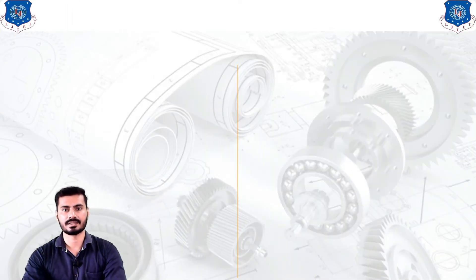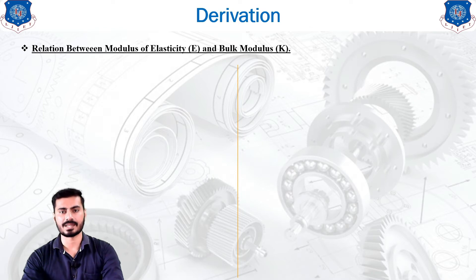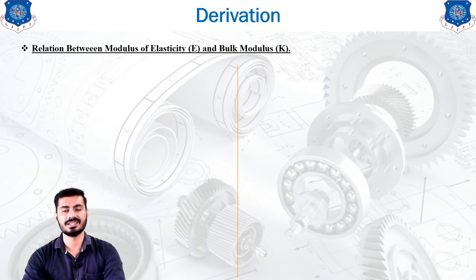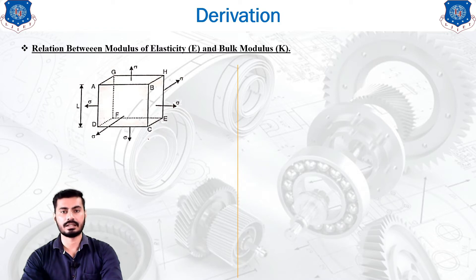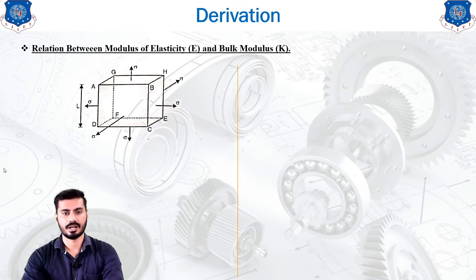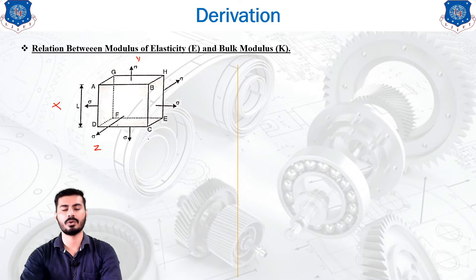Let's get started with the first slide, which is the derivation of the relation between the modulus of elasticity E and bulk modulus K. Both have been introduced and defined in the previous lectures. To establish the relationship between them, we have considered one block as you can see in this diagram, which is subjected to equal intensity of stress in three mutually perpendicular directions X, Y, and Z.